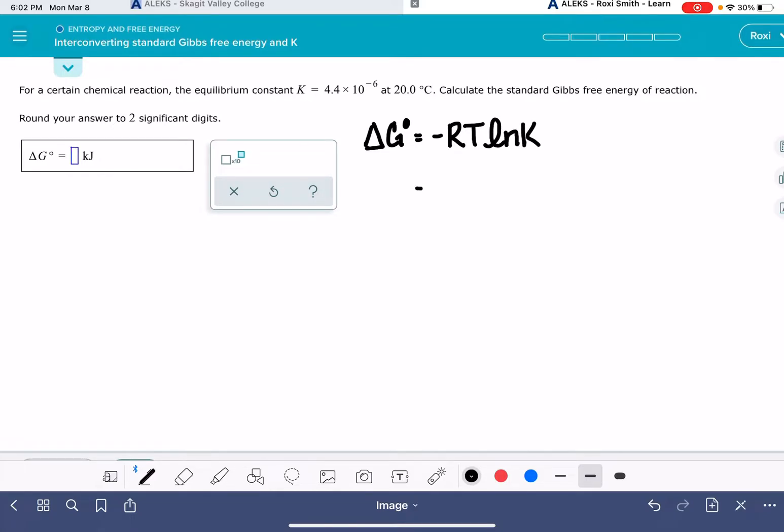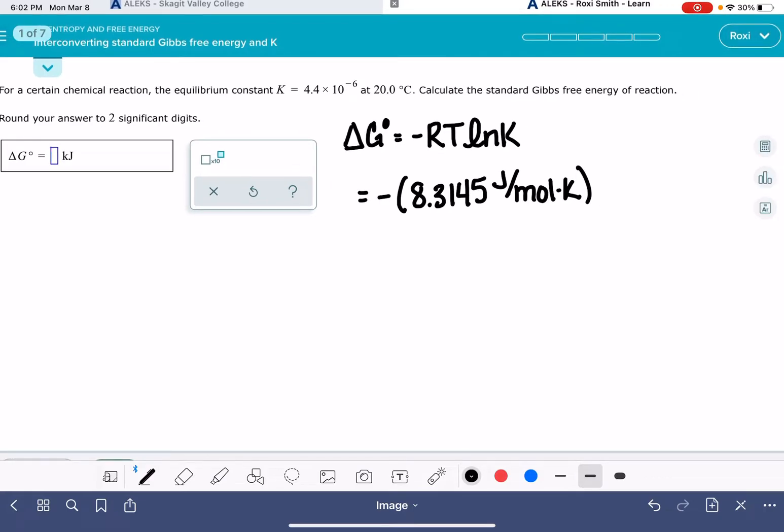And in this equation, R is the ideal gas constant with the units of joules per mole Kelvin. So this is going to be negative 8.3145 joules per mole Kelvin. And if you're using the ALEKS calculator, the ALEKS calculator has this value of R in it as one of the constants.